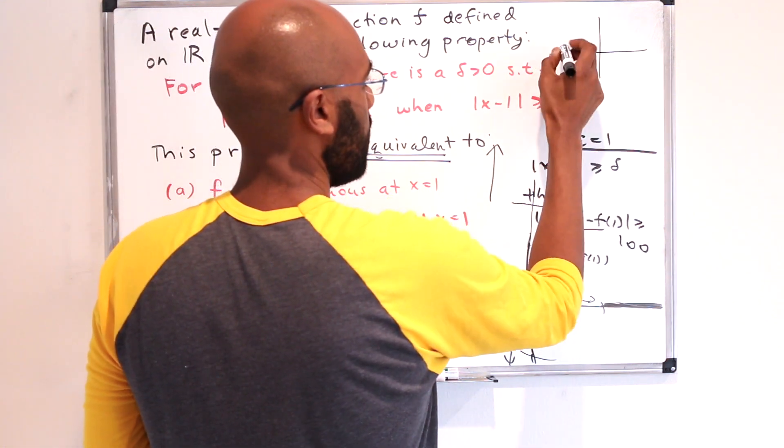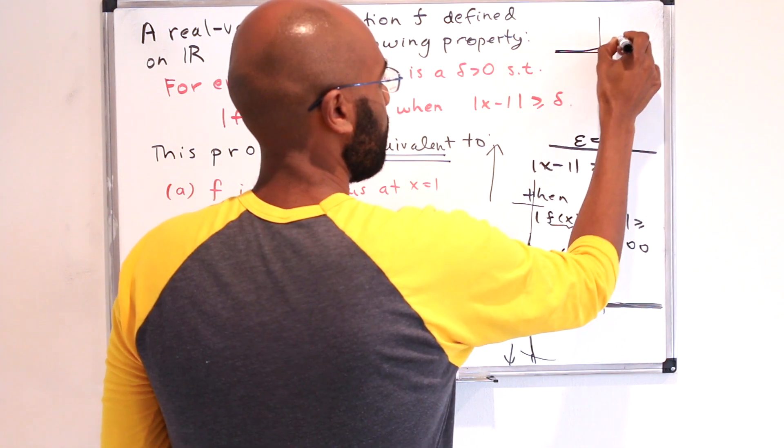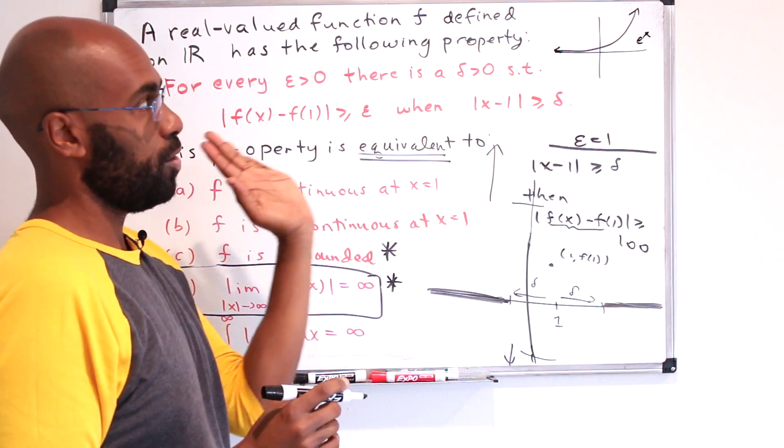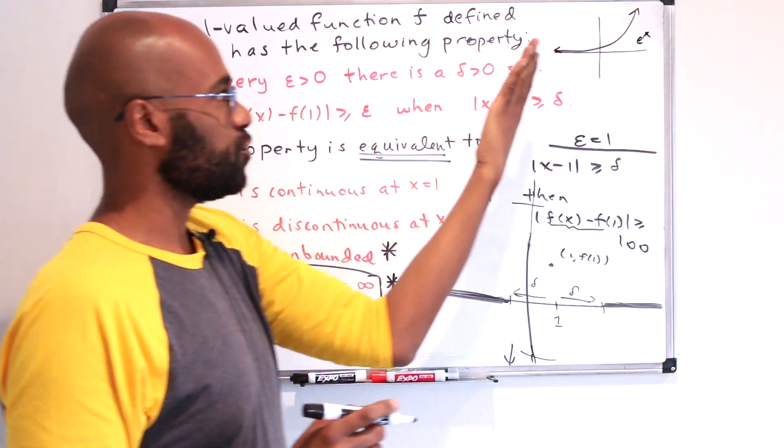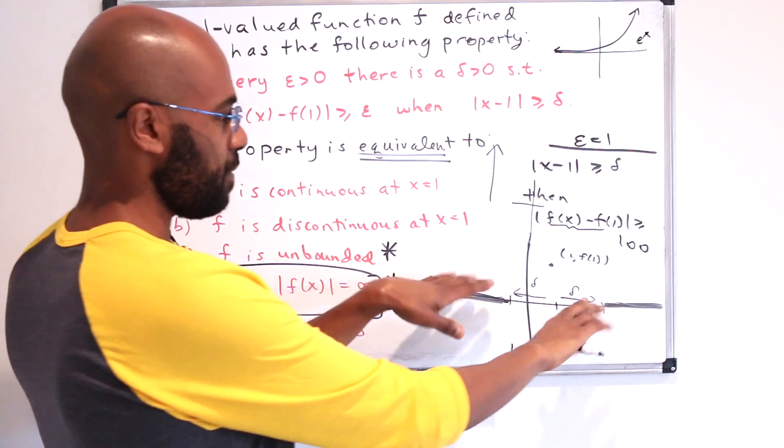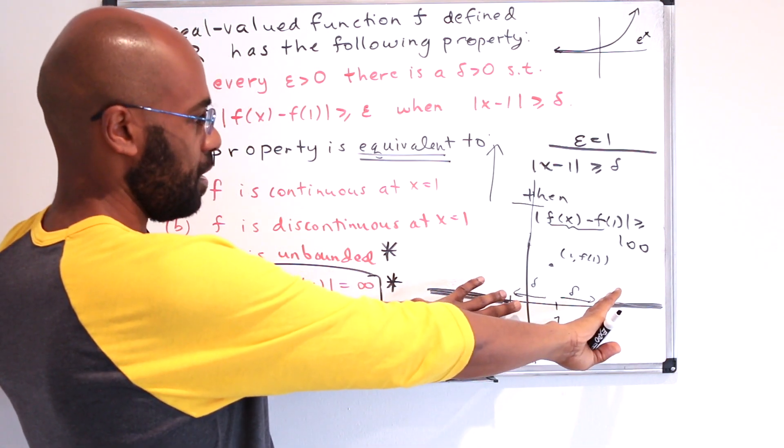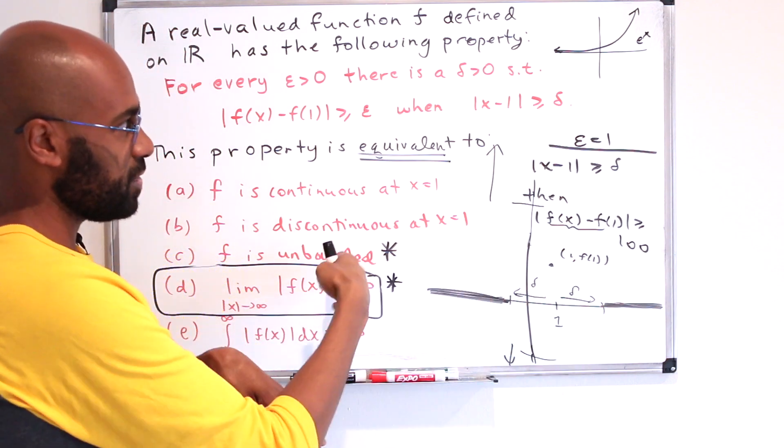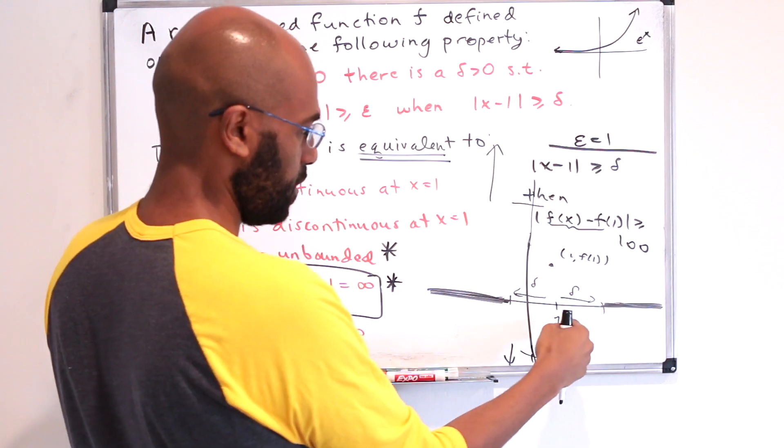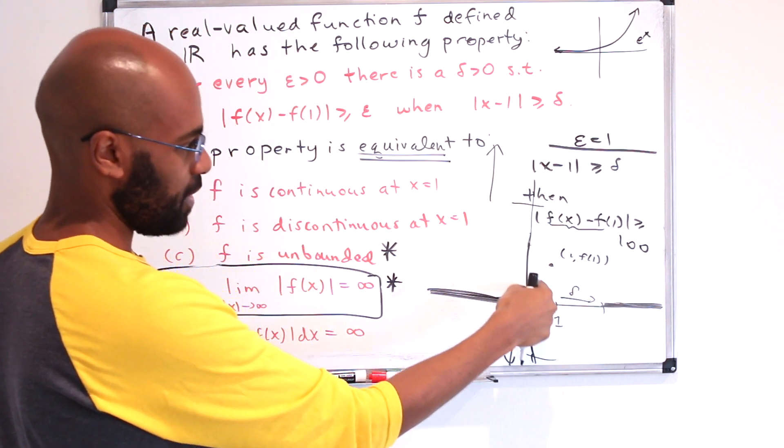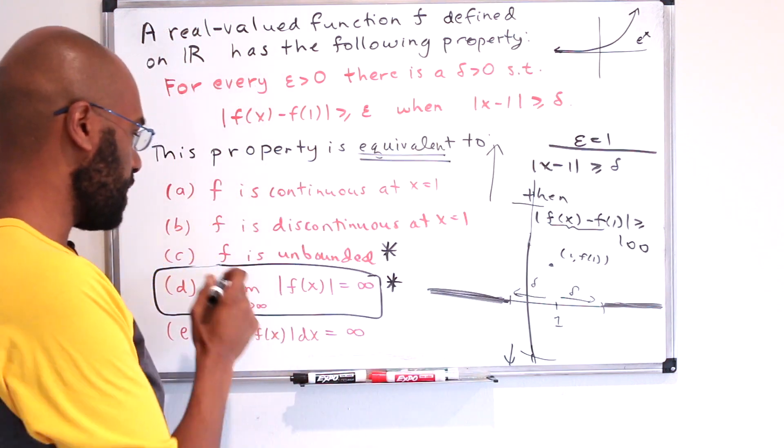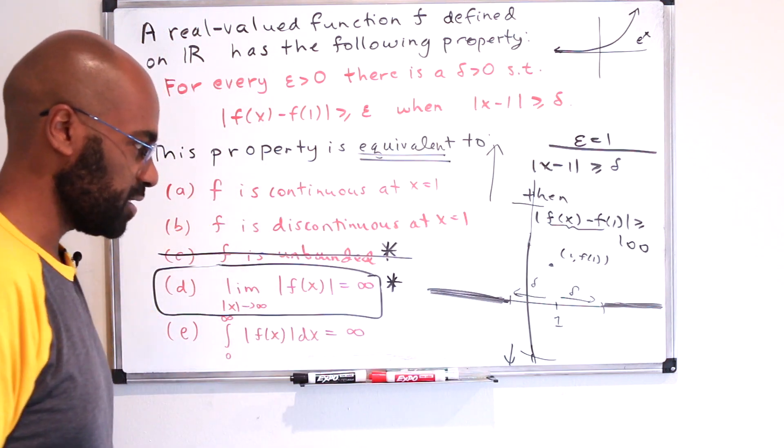So for example, your graph could look something like the graph of e to the x, which blows up when you go to the right, but actually converges to zero when you go to the left, right? In that case, we don't have this phenomenon happening when we go to the left, right? So when x is in the range where it's less than one minus delta, we're not going to have this phenomenon where the function blows up. So that eliminates choice C as a possibility.